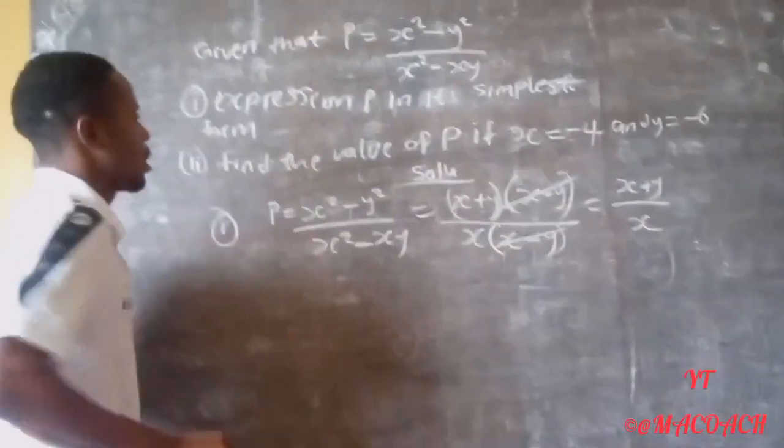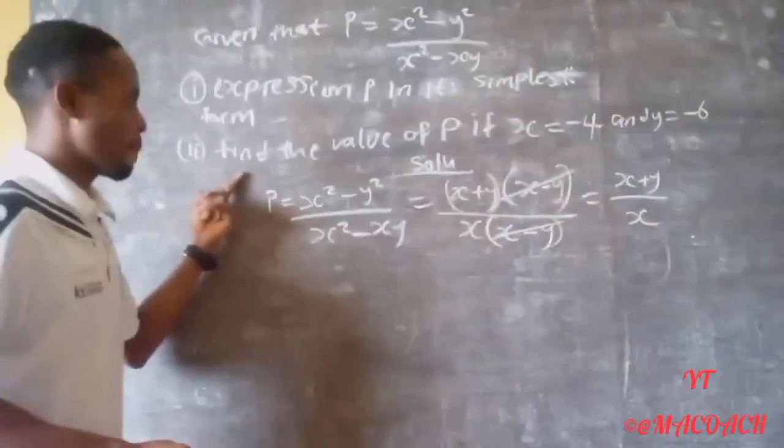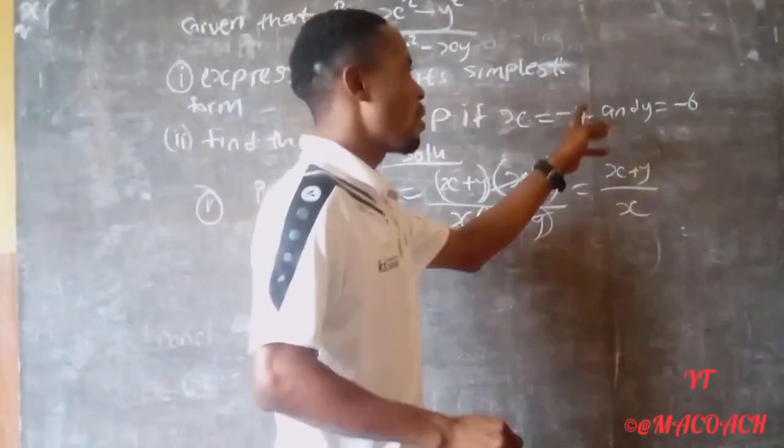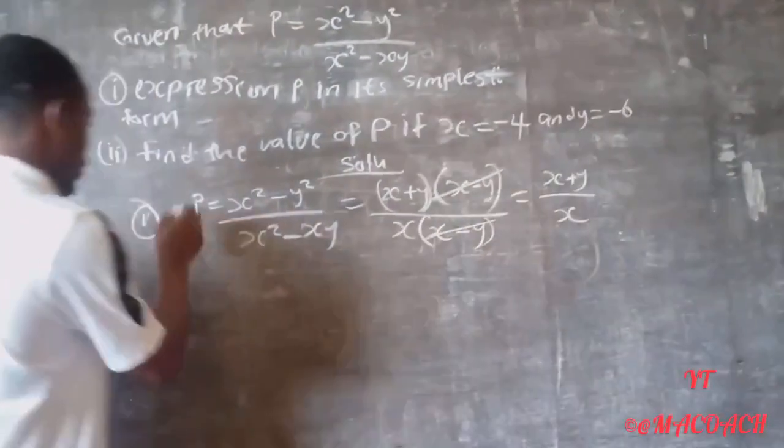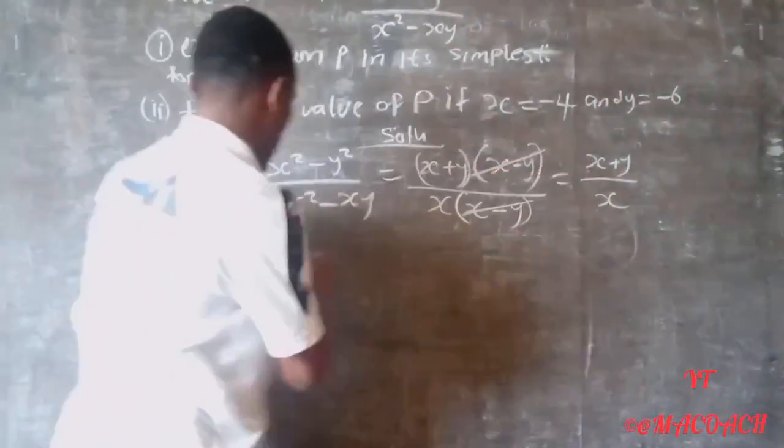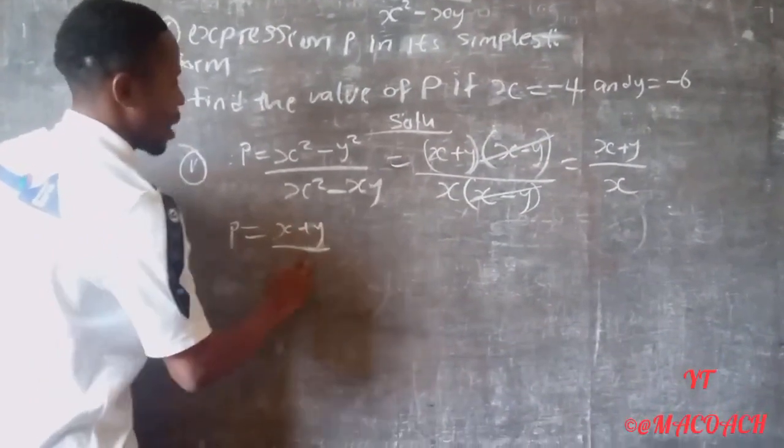Question 1 is solved. For question 2, we need to find the value of P if S equals minus 4 and Y equals minus 6. From our simplified equation, we have P equals S plus Y divided by S.